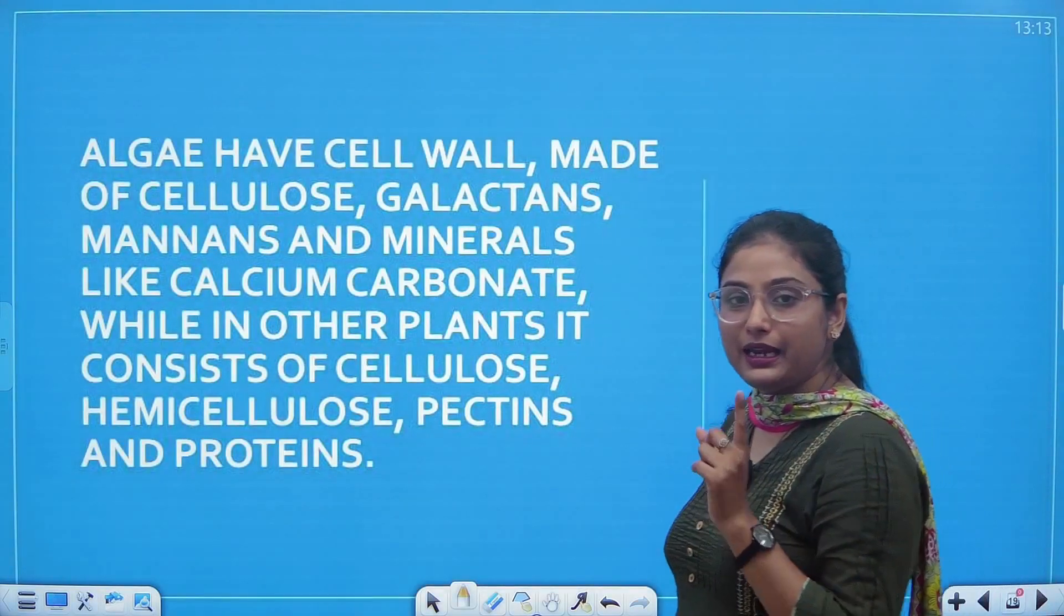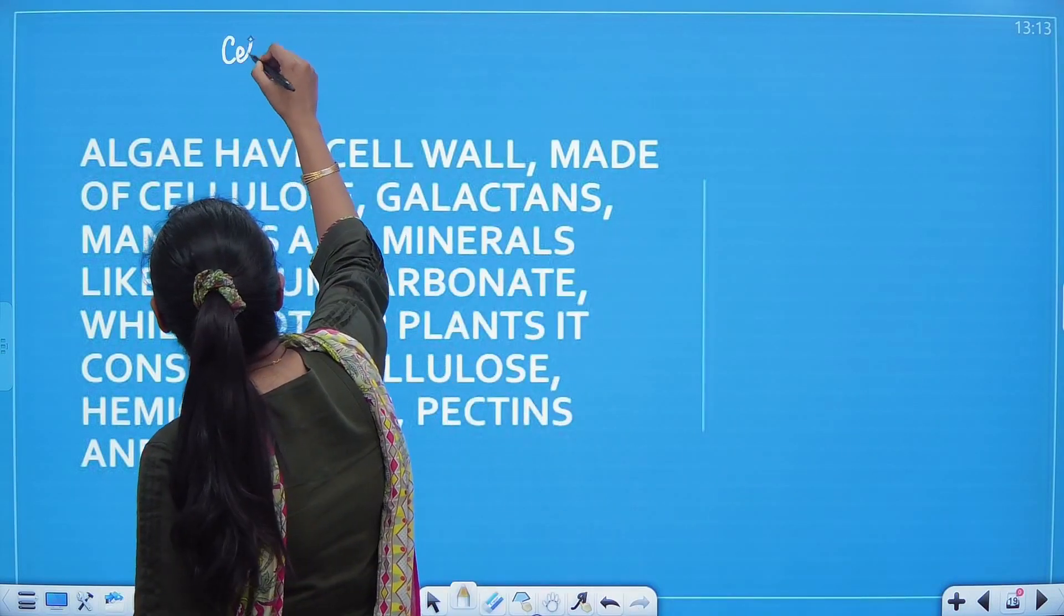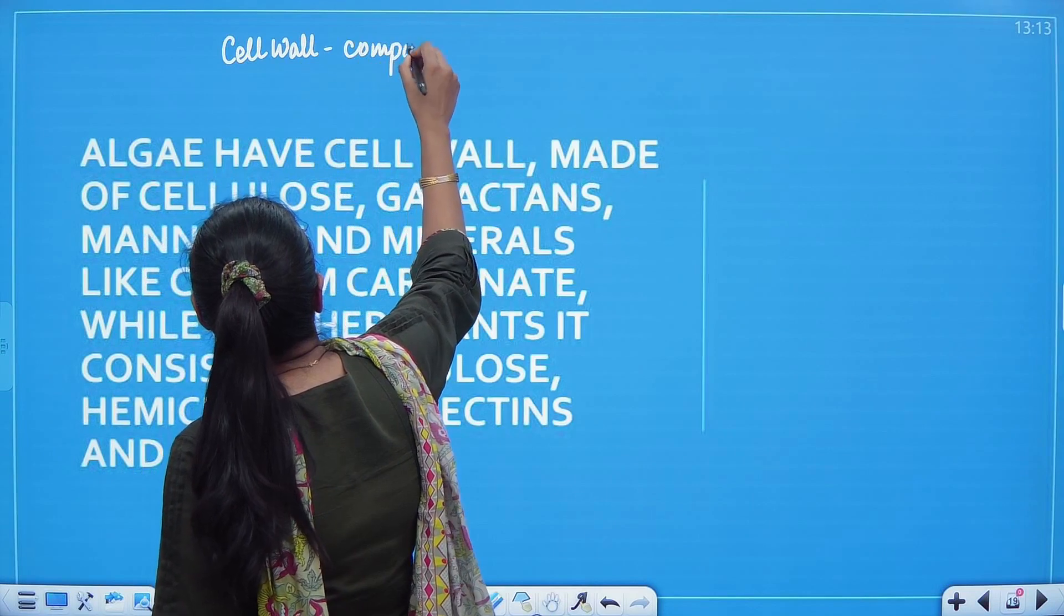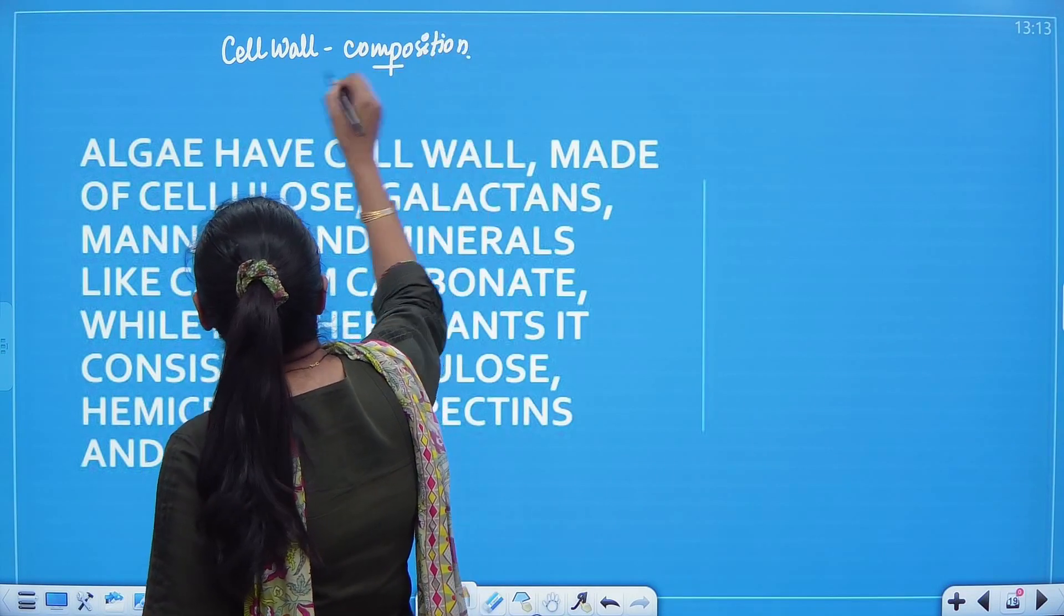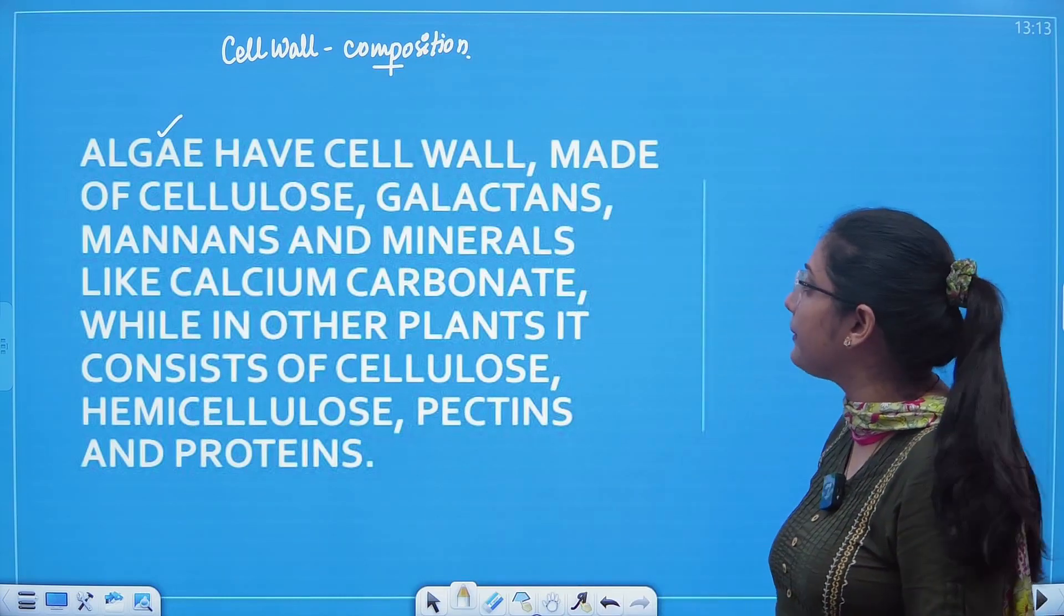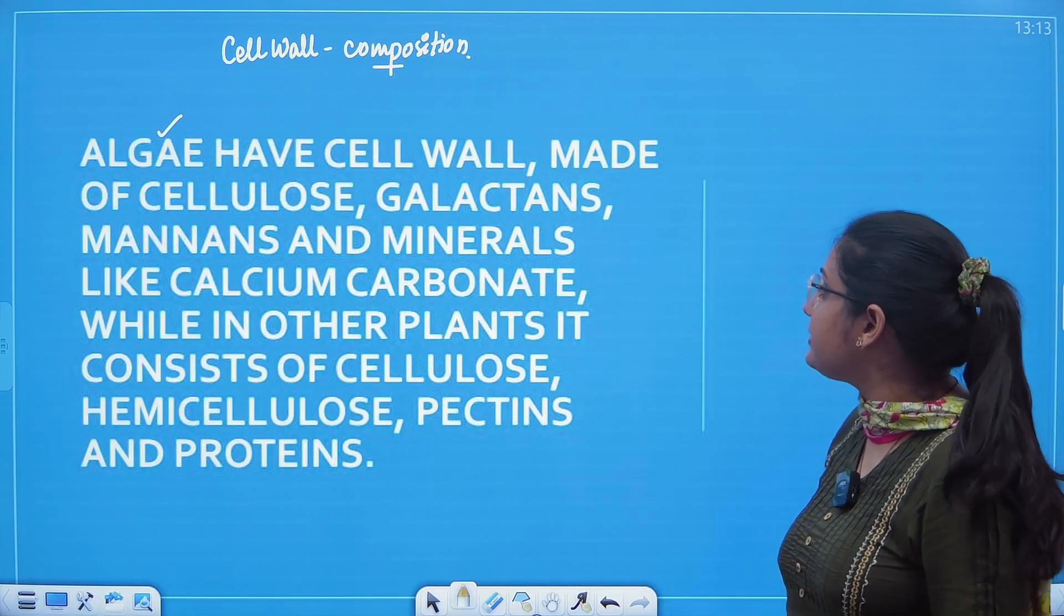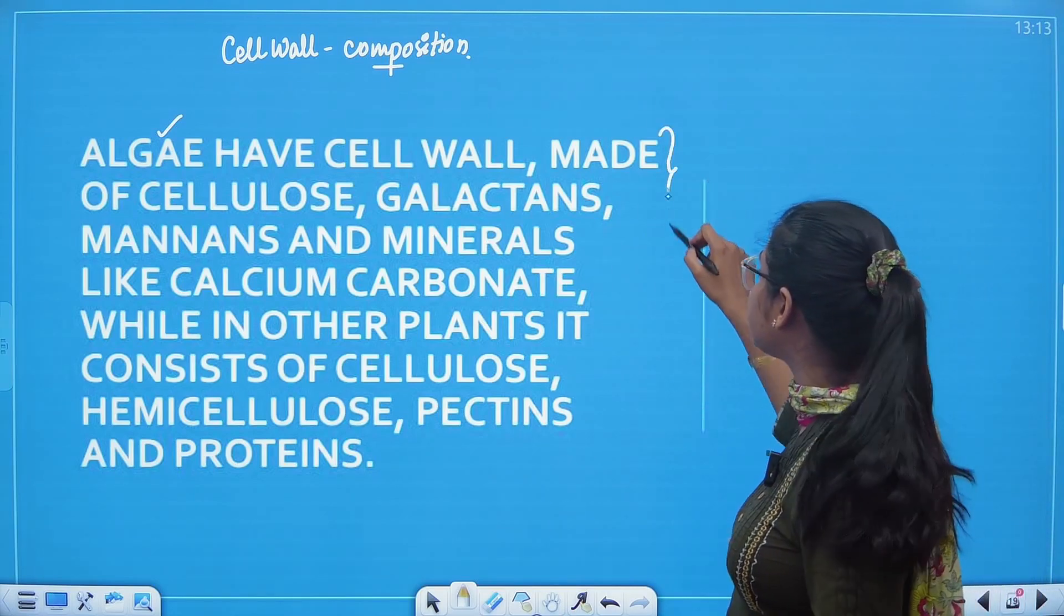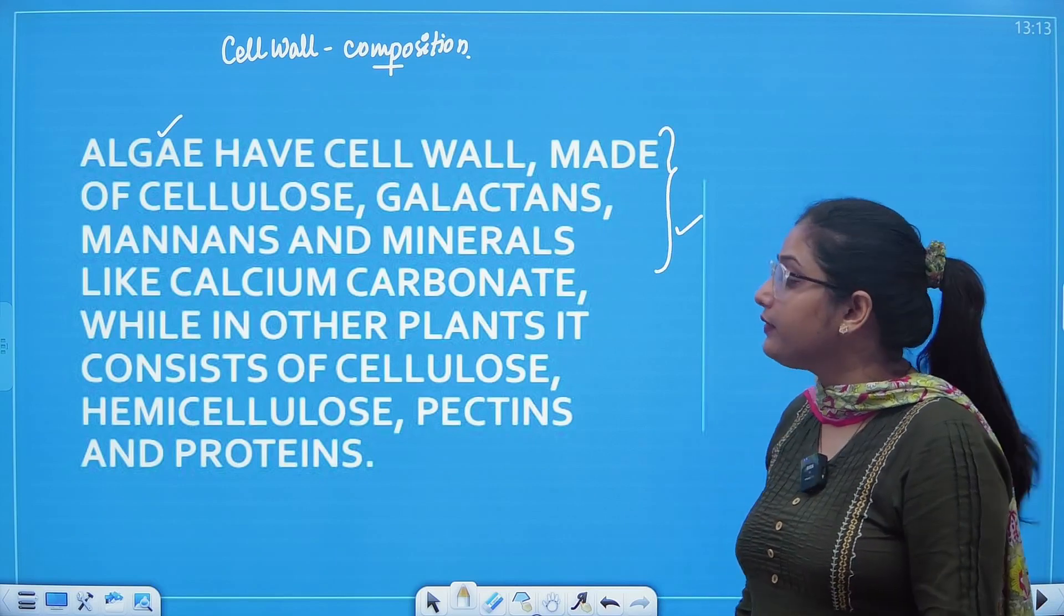In the algae, first we will talk about the composition of cell wall. The cell wall is made by something different in different organisms. So first, let's talk about algae. Algae have cell walls made up of cellulose, galactins, mannins and minerals like calcium carbonate.